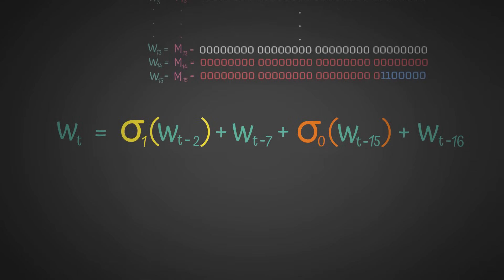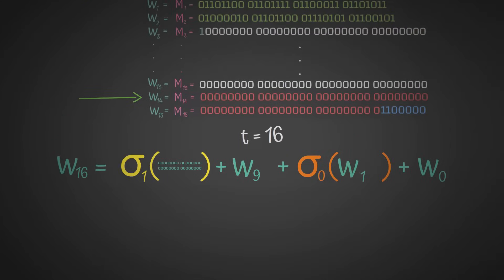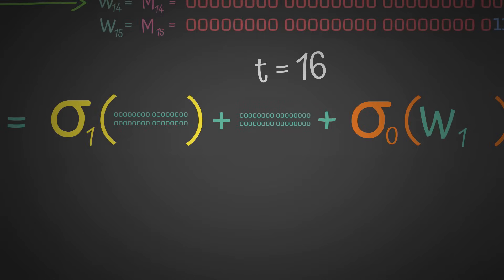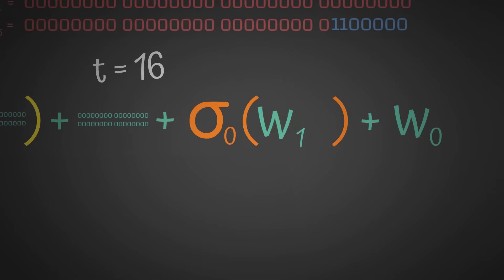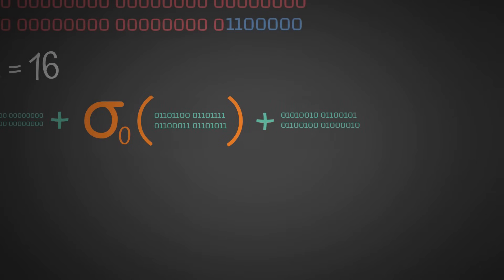Back to where we were. Now let's take a concrete example and shove t equals 16 into here. We have W16 equals sigma 1 of W14 plus W9 plus sigma 0 of W1 plus W0. W14 is just all 0s. W9 lives somewhere up here, which is all 0s. W1 is this thing, so we'll put that there. W0 is this thing, so we'll put that there.